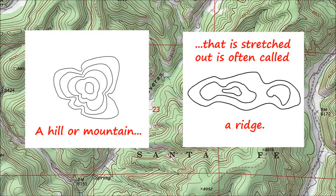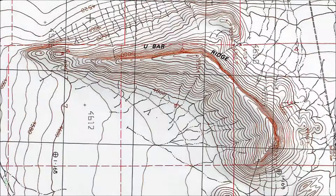Up to now I've used the word ridge to refer to places that stick out from the local terrain. Sometimes isolated hills or mountains are stretched out, in which case the entire hill or mountain is often called a ridge. This is U-Bar Ridge in southwest New Mexico. Here the contour lines aren't just stretched out — they're indicating an isolated ridge shaped like a fish hook.